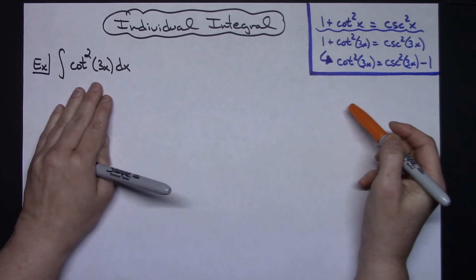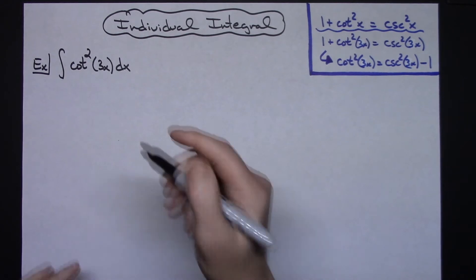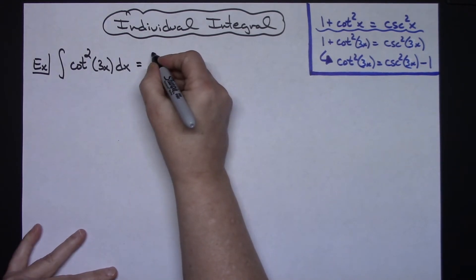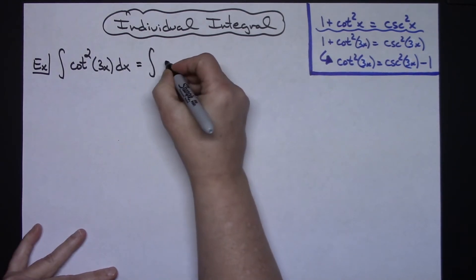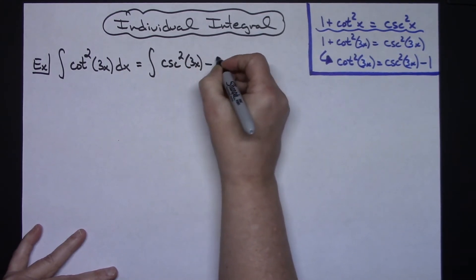So what we're going to do here before we start this integration is we're going to do this substitution. I'm going to be switching this to the integral of cosecant squared of 3x minus 1 dx.